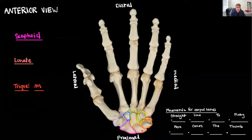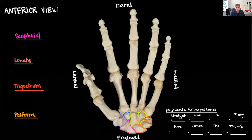After the lunate comes the triquetrum, highlighted in red. Notice how much of the triquetrum is covered by the bone in orange, called the pisiform, which sits on top of the triquetrum. The pisiform is actually a sesamoid bone that forms when you're a baby crawling. A memory trick: if I'm so 'pissed' I'm going to slam my fist on the table, I'd break my pisiform — because I'm pissed.